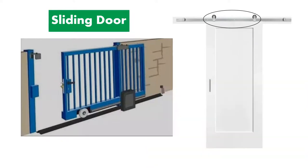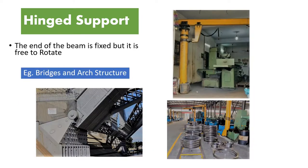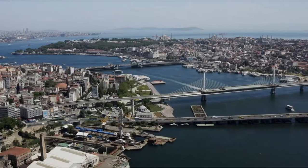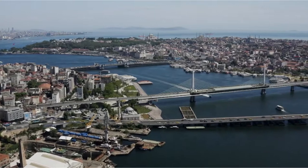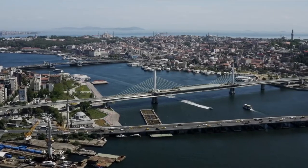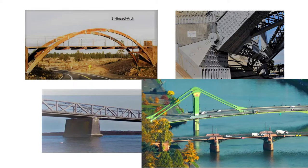Next is hinge support. As we saw, the end of the support is fixed but it is free to rotate, meaning it cannot resist moment. Hinge support is mainly seen in bridges and arch structures. Roller support and hinge support are mainly used in bridges and arch structures because these supports allow the bridges to expand and contract with temperature changes, so that the bridges can function easily in all seasons and under different types of loads.